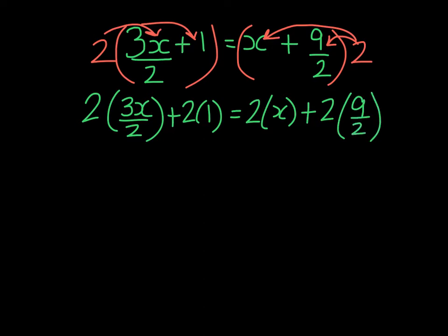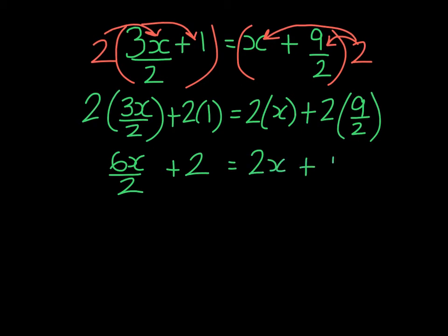Well, 2 times 3x in the numerator will give me 6x and 2 in the denominator. 2 times 1 is 2. 2 times x is 2x. And 2 times 9 halves will give me 18 halves.